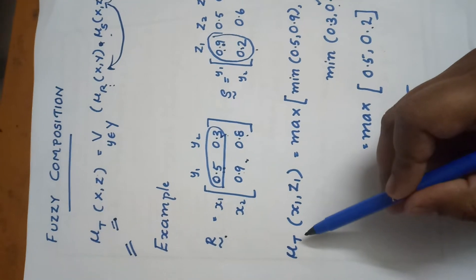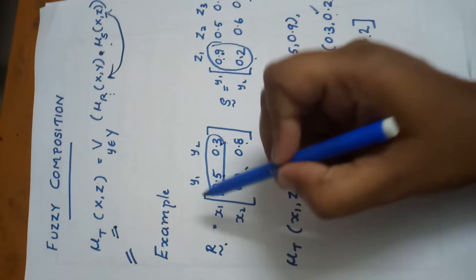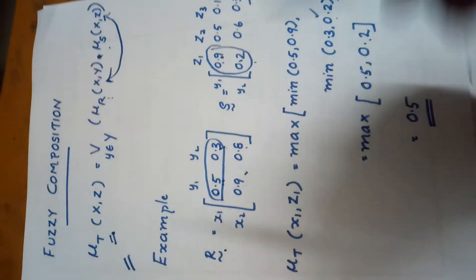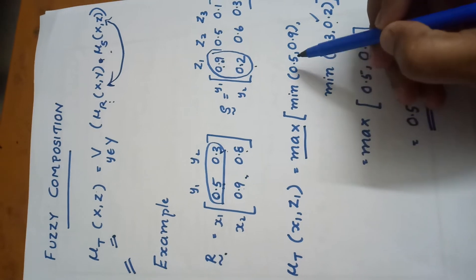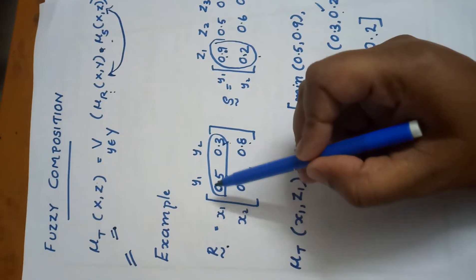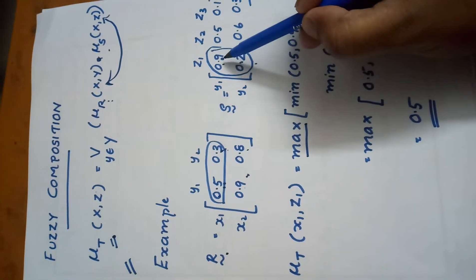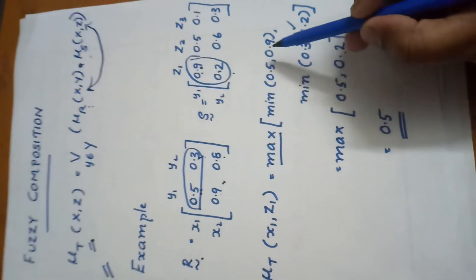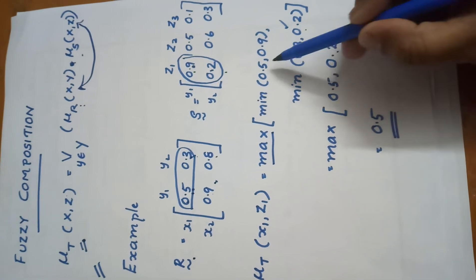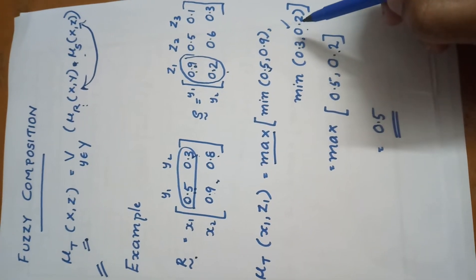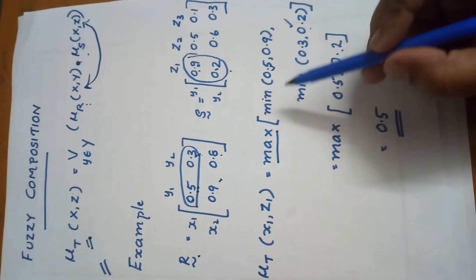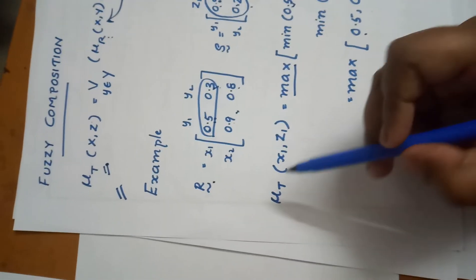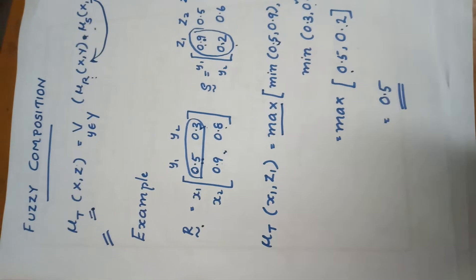Applying the equation: μT(x1, z1), where x1 denotes the first row and z1 denotes the first column of the second set. That is maximum of [min(0.5, 0.9), min(0.3, 0.2)]. Minimum of 0.5 and 0.9 is 0.5, and minimum of 0.3 and 0.2 is 0.2. Then we take the maximum of 0.5 and 0.2, which is 0.5. So μT(x1, z1) = 0.5.